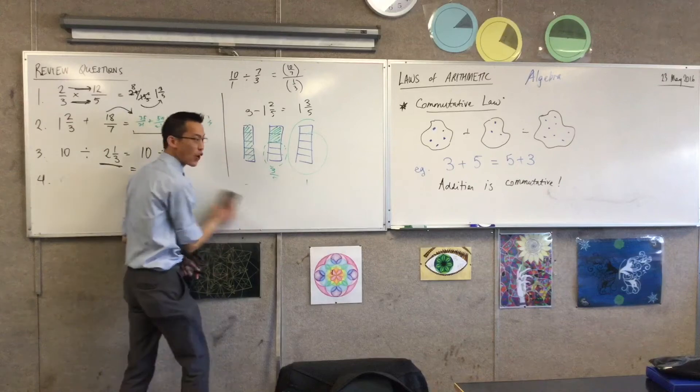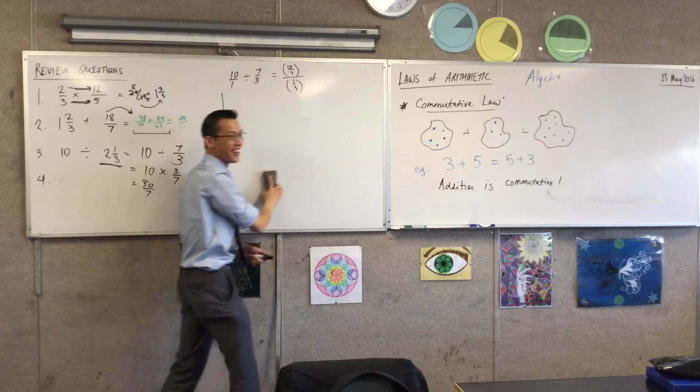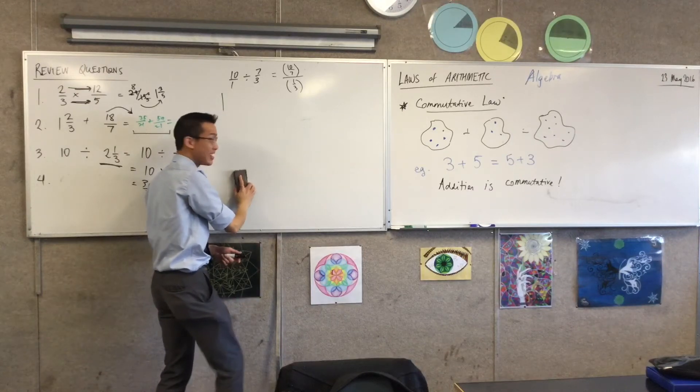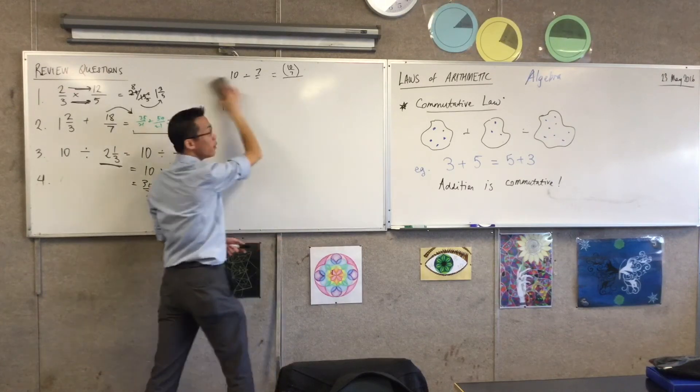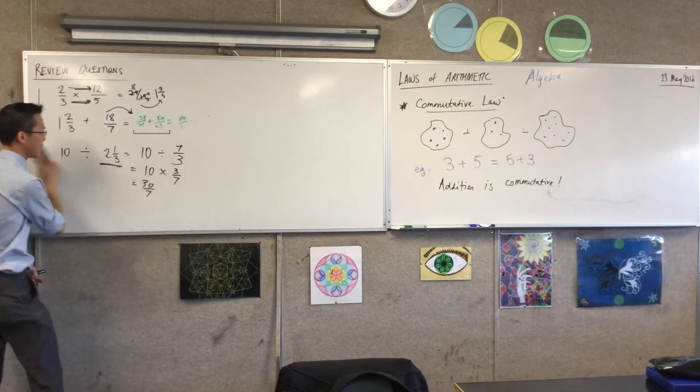Now, addition is not the only operation where you can change the order and you get the same thing. Multiplication is also commutative, and here's how I'm going to illustrate it to you.